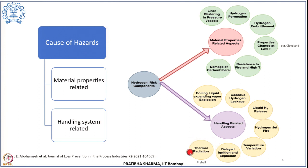Thermal radiation — from a high temperature flame or fire nearby — can lead to catastrophic events, causing damage to equipment and the structure of hydrogen facilities. This thermal radiation or high temperature can lead to loss of confinement in a compressed gaseous hydrogen vessel or liquid hydrogen vessel. In a compressed gaseous hydrogen vessel, the increase in temperature causes expansion that can lead to rupture of the vessel.